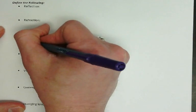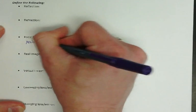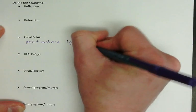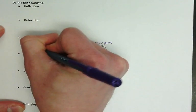So focal point is the point where light converges, usually for a mirror or a lens. That's what we're usually talking about.